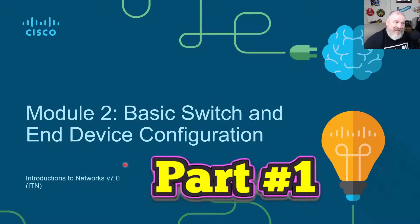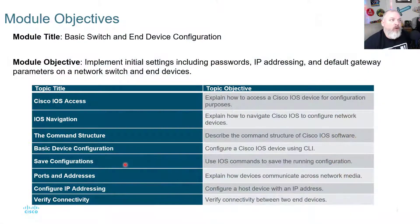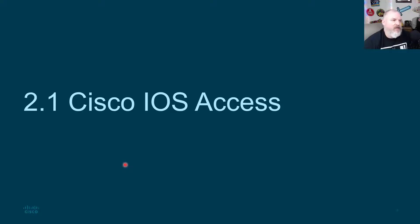Module 2: Basic Switch and End-Device Configuration. We will be covering these topics in this module: Cisco IOS access, IOS navigation, the command structure, basic device configuration, save configurations, ports and addresses, configure IP addressing, and verify connectivity.